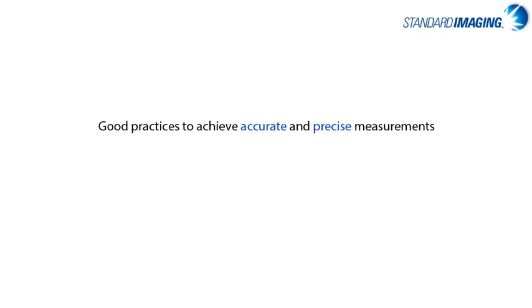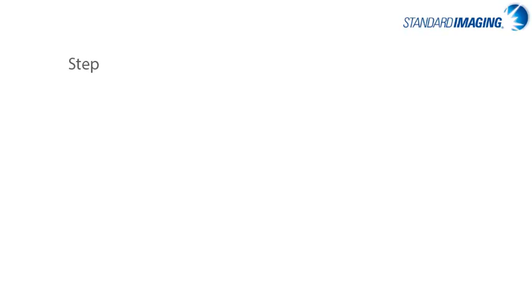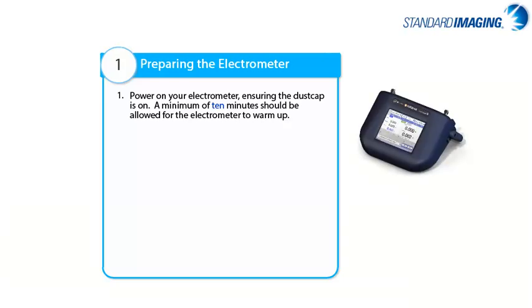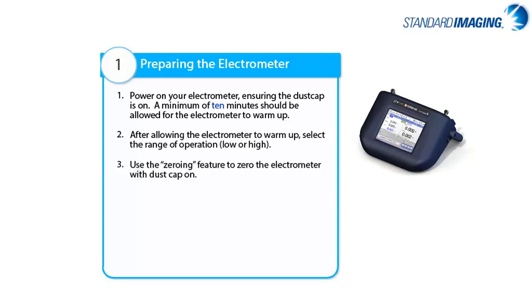Now we'll transition to a general description of good practices to achieve accurate and precise measurements using an ion chamber or other detector under a typical LINAC beam. Assuming we have a properly calibrated chamber and electrometer, the first step would be to set up your electrometer. The electrometer should be powered on with a dust cap in place. A minimum of 10 minutes should be allowed for the electrometer to warm up, and this is without any bias applied. After the electrometer is warmed up, select your range of interest and zero the instrument.